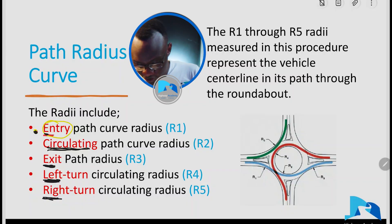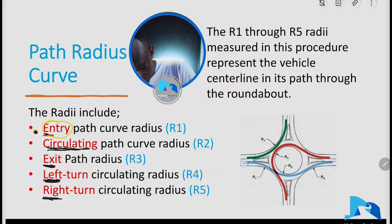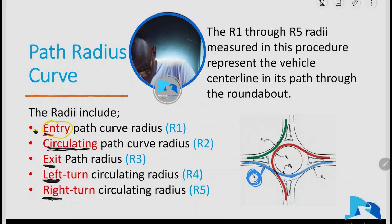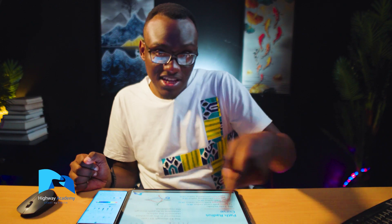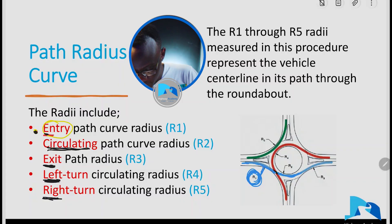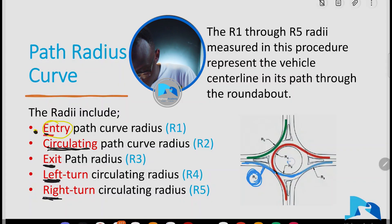Let's demonstrate this. R1 is the one shown in blue — it's this curve that you're seeing here. That's R1. The circulating path radius, R2, is on the central island — it's an offset from the central island.